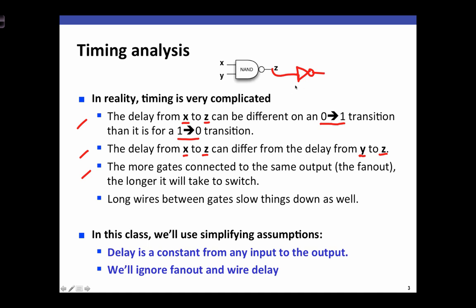So if this NAND gate is only driving a single inverter, it might switch quickly. But as I attach additional circuits to the output of this NAND gate, it'll take longer to switch. And finally, if there are long wires that connect this circuit to another circuit, those long wires can add capacitance and resistance, which again cause this NAND gate to take longer to switch.